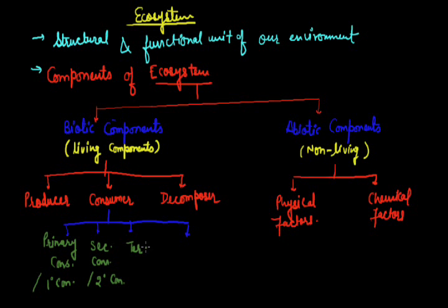Next one is tertiary consumer, it is also known as three degree consumer. And the next one is top consumer. Usually in a food chain four to five organisms are involved, but if the food chain is too long then after tertiary consumer there will be more kinds of consumer like quaternary, pentanary consumer and so on.